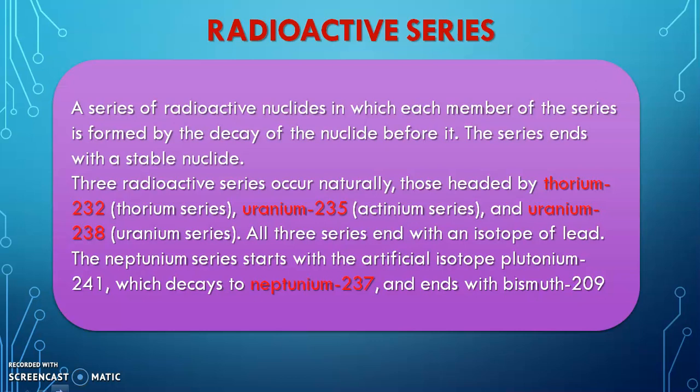So all natural chain disintegration processes end with a stable element. We are having four radioactive series, and three of them end with a stable atom. This chain of disintegration we call by the name radioactive series, and we have mainly four important radioactive series: thorium-232 (thorium series), uranium-235 (actinium series), and uranium-238 (uranium series). All these three series end with an isotope of lead, whereas the fourth series — the neptunium series — ends with bismuth-209 as the stable element.